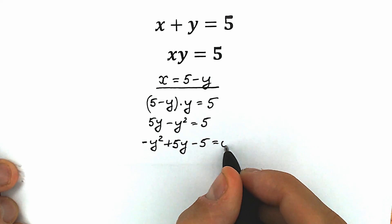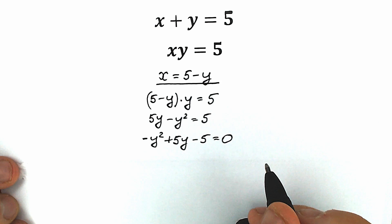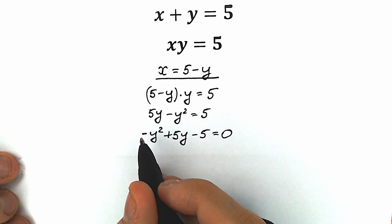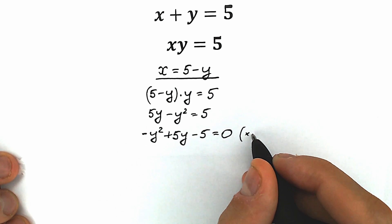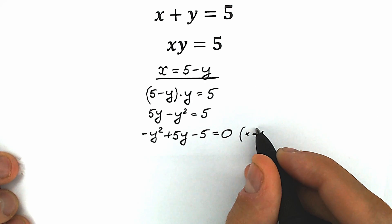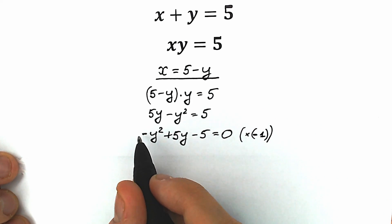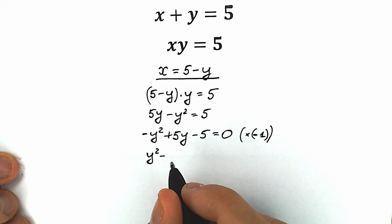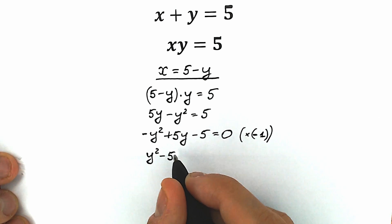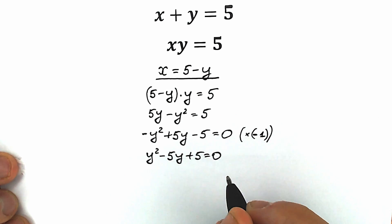From the right side we have minus 5 equal to 0. But we prefer a plus sign, so let's divide by minus 1 — it changes nothing for us. As a result we have y squared minus 5y plus 5 equal to 0.